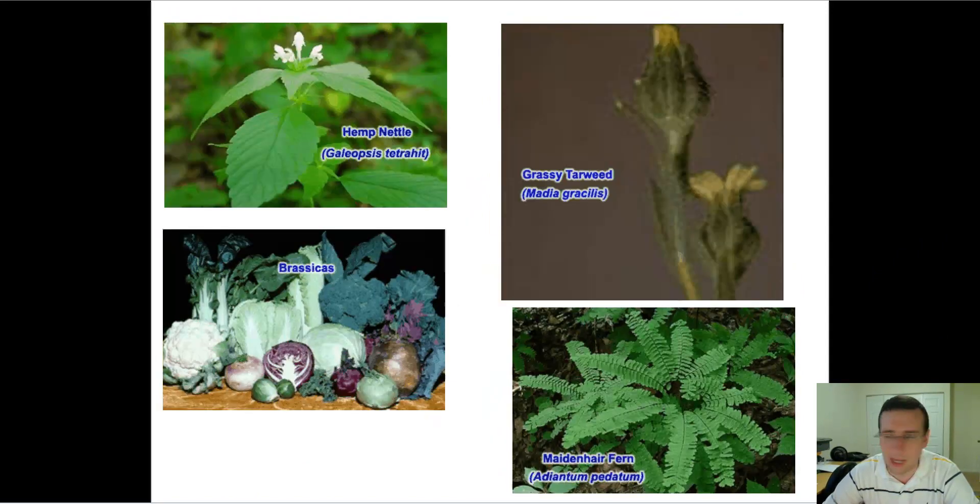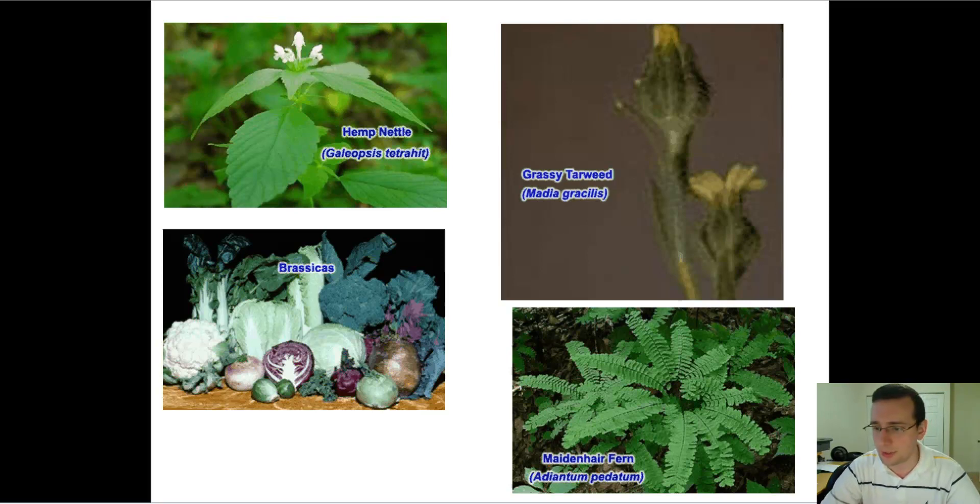You have the hemp nettle. They thought it was the result of hybridization of two different species of the genus Galeopsis. This particular one is Tetrahit, called that because it has visible chromosomal morphology, which is polyploidy. They figured out it was the combination of two other species in the same genus, Speciosa and Pubescens. You put them together in the lab, you make something that looks exactly like the hemp nettle. A naturally occurring species is like that, discovered by another scientist in 1932.